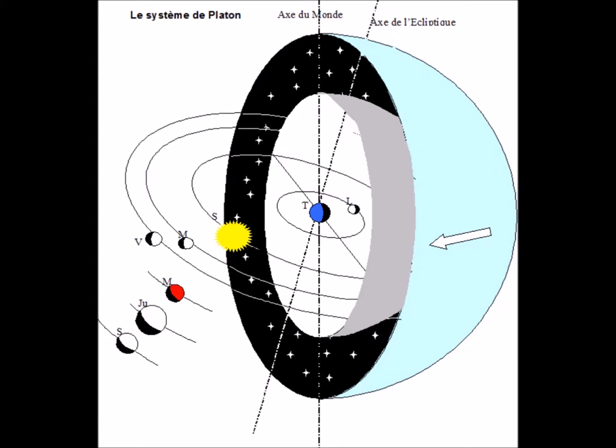Plato places the spherical earth around the axis of the world. But it is not positioned on this axis. This axis itself is not located. There is no absolute position for Plato.